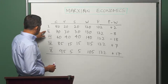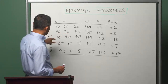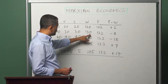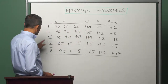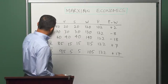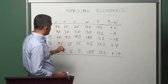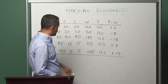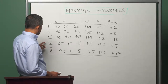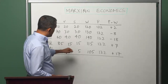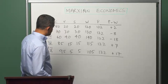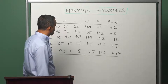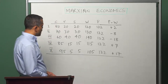Sector 3 has 60 and 40 as constant and variable capital, so the total output value is 140. Sector 4 has 85 and 15, so the value of output is 115. And sector 5 has 95 and 5, so the value of the output is 105.